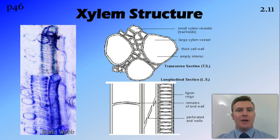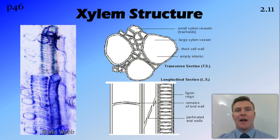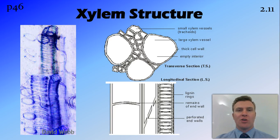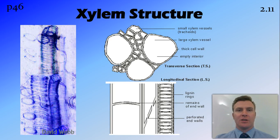In this diagram we can also see the lignin rings deposited around the inside of the xylem tissue in the trachea. These strengthen the structure and give it a woody texture.